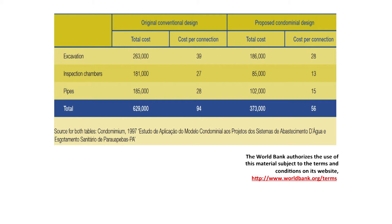A good rule of thumb is that a connection to a condominial system is about 40 to 50 percent cheaper than a connection to a traditional system. Notice that although this is a very substantial cost reduction, it is a reduction in only one of the seven cost components we discussed previously. Also, at least for backyard designs, the service provided by a condominial system may not be quite as convenient.